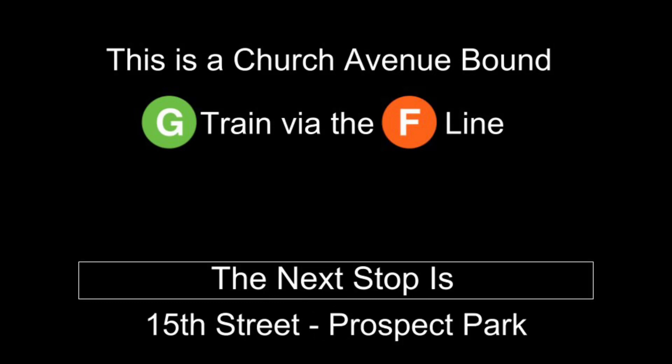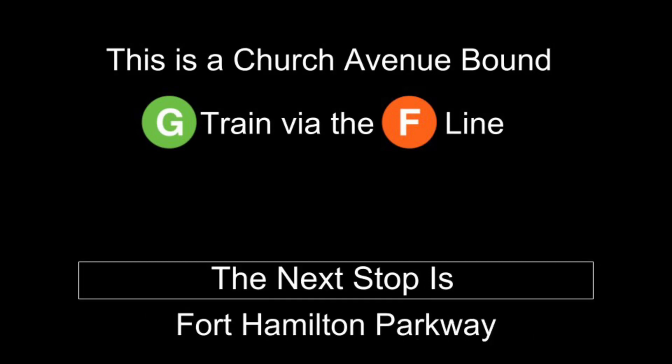This is a Church-Avenue-bound G Train via the F line. The next stop is 15th Street, Prospect Park. This is a Church-Avenue-bound G Train via the F line. The next stop is Fort Hamilton Parkway.